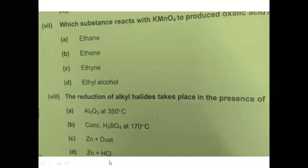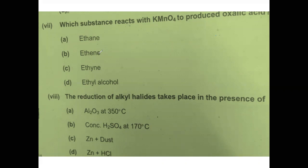MCQ number 7: which compound reacts with potassium permanganate to produce oxalic acid? The reaction with potassium permanganate is Baeyer's test, a test for unsaturation. Ethylene reacts with dilute alkaline potassium permanganate to form ethylene glycol. But ethyne, when it reacts with potassium permanganate, gives oxalic acid as the final product. So the correct option is ethyne reacting with alkaline potassium permanganate gives oxalic acid.